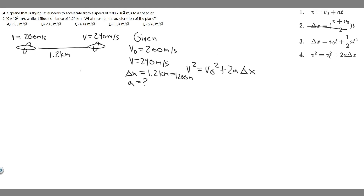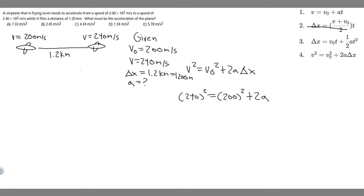Now we have the correct units, so we can plug in and solve for acceleration. Plugging in the variables: v is 240, so 240 squared equals v sub 0 squared — 200 squared — plus 2 times a times delta x, which is 1,200 meters. Simplifying: 240 squared is 57,600.